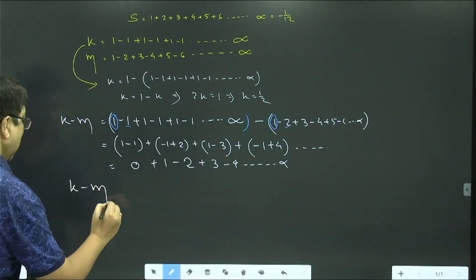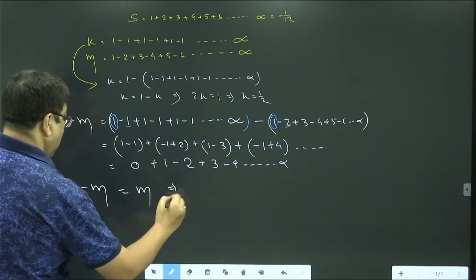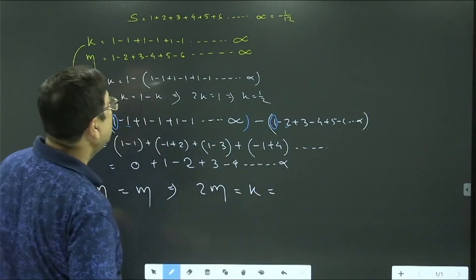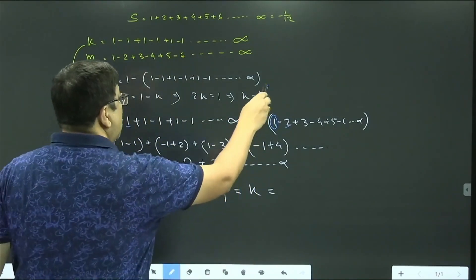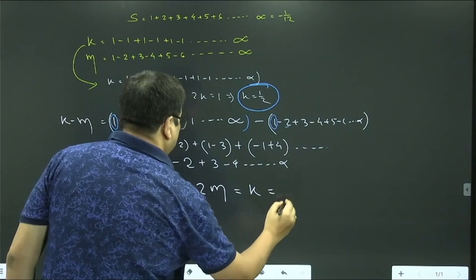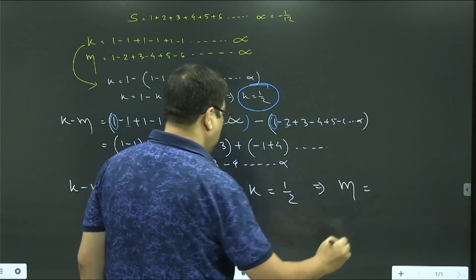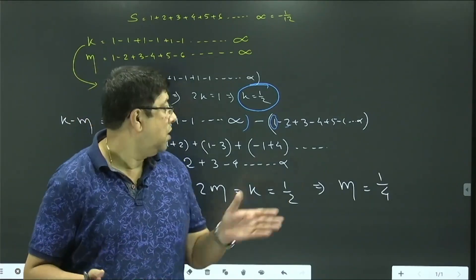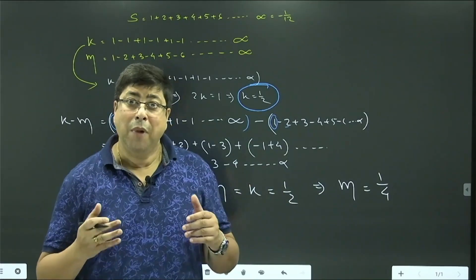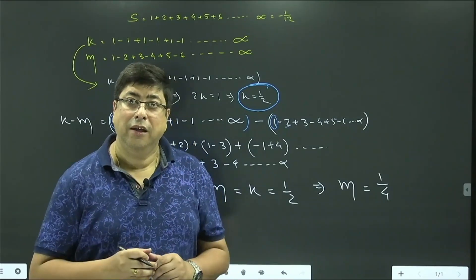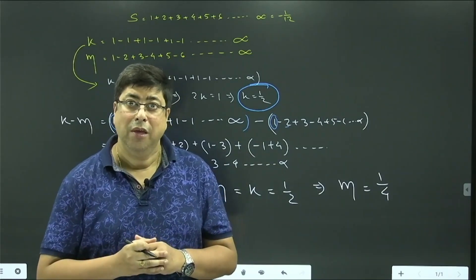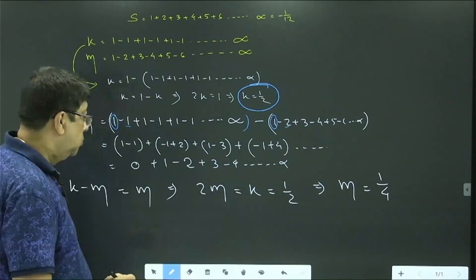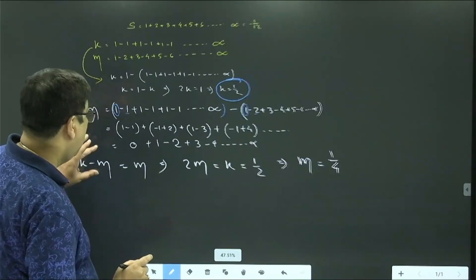Since K - M = M, we get 2M = K. But K = 1/2, so M = 1/4. This is an astonishing result. I believe Ramanujan was someone who truly understood infinity — otherwise, how could anyone arrive at such a result? Now we have M = 1/4 and K = 1/2, and we move to the main part of the proof.